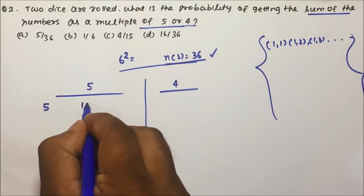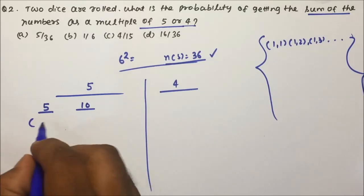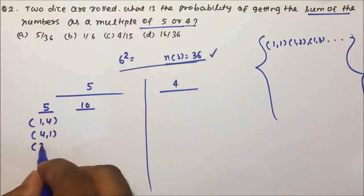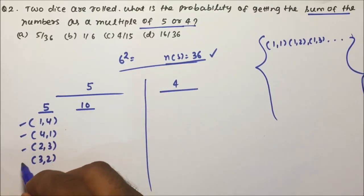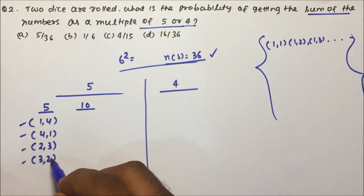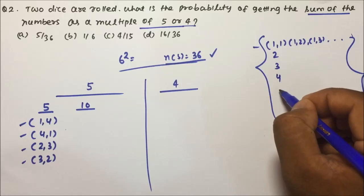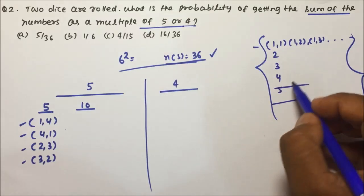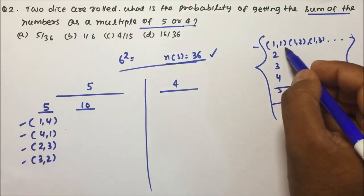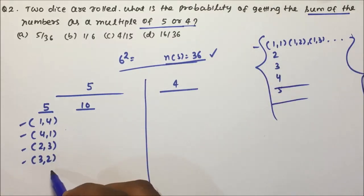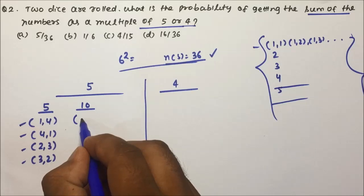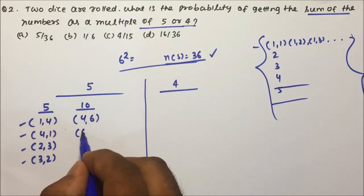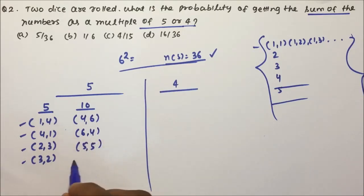We will handle 5 and 4 separately. For multiples of 5: the possible sums are 5 and 10. When the sum is 5, the combinations are (1,4), (4,1), (2,3), and (3,2) — four combinations. Note that 5 and 6 on either die cannot give a sum of 5 since the minimum would be 6. For a sum of 10, the combinations are (4,6), (6,4), and (5,5) — three combinations.